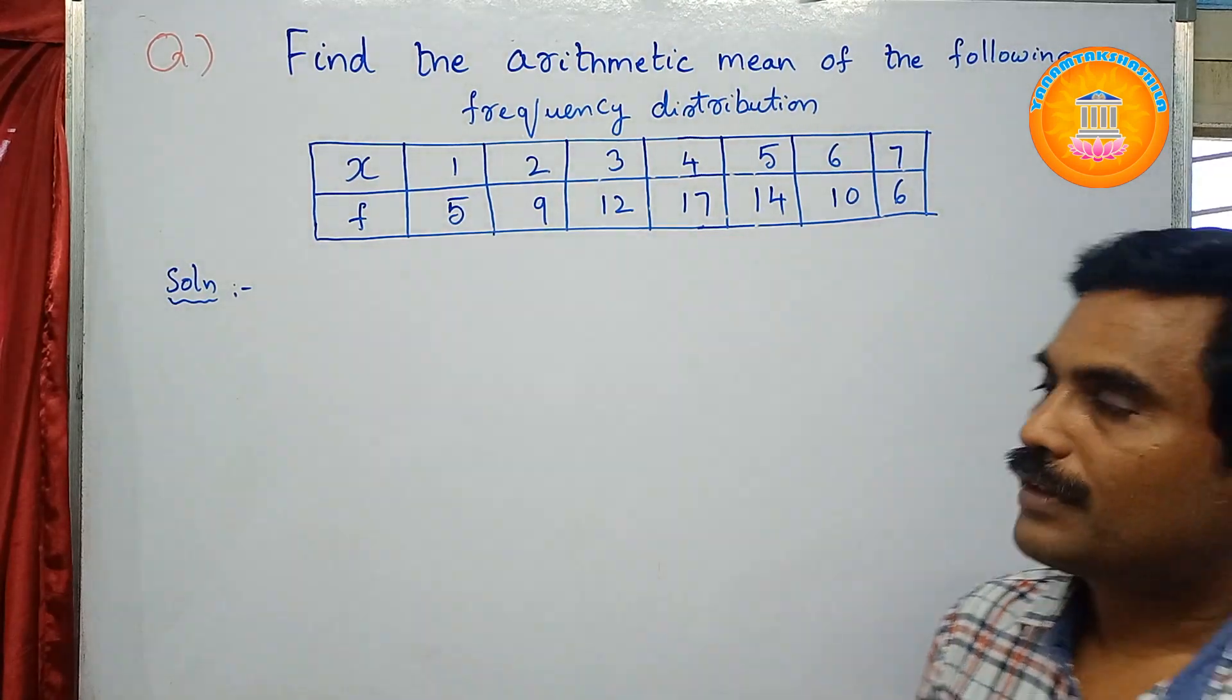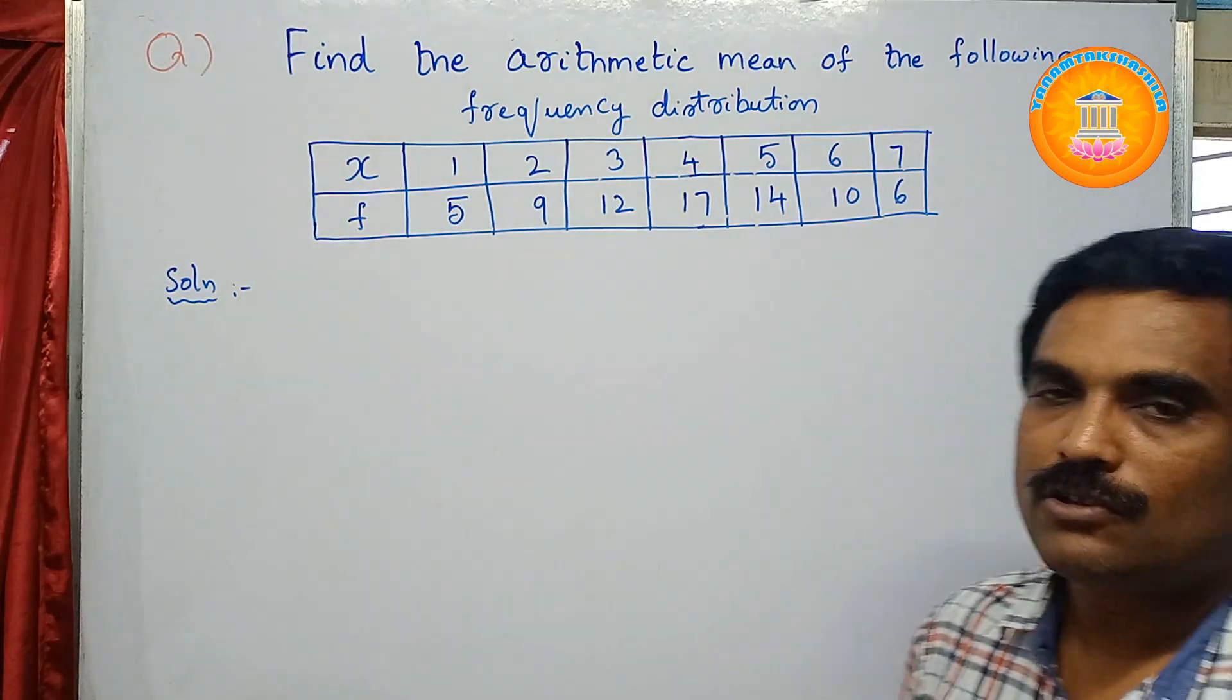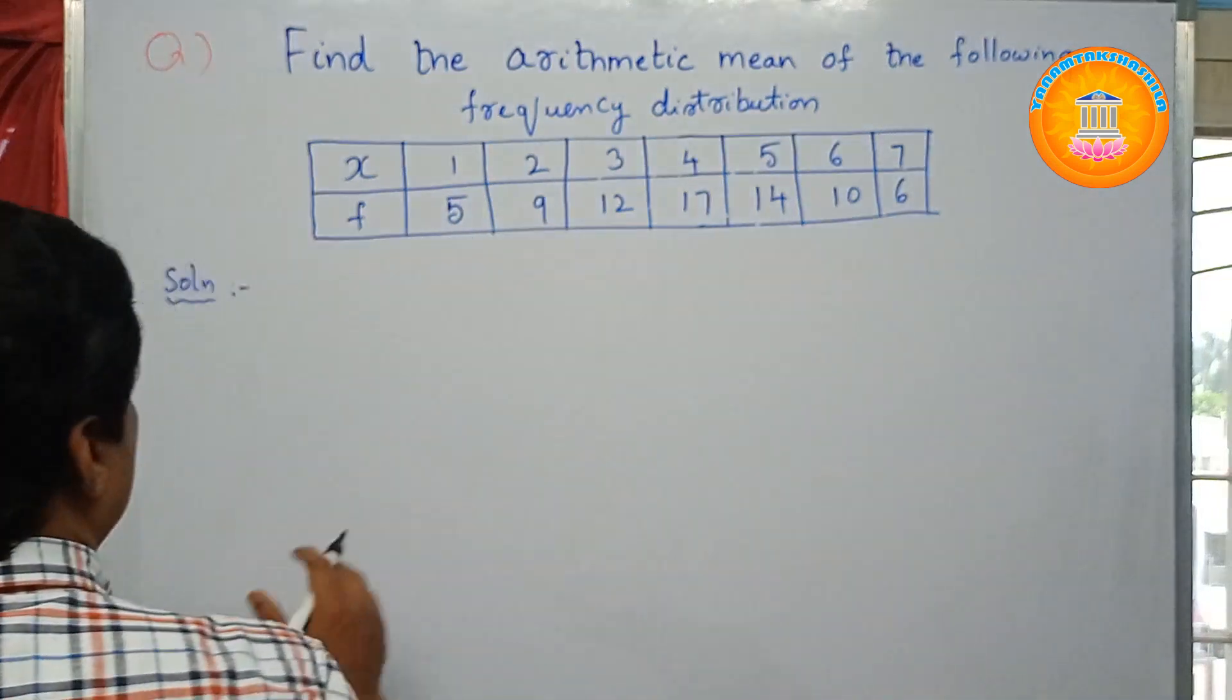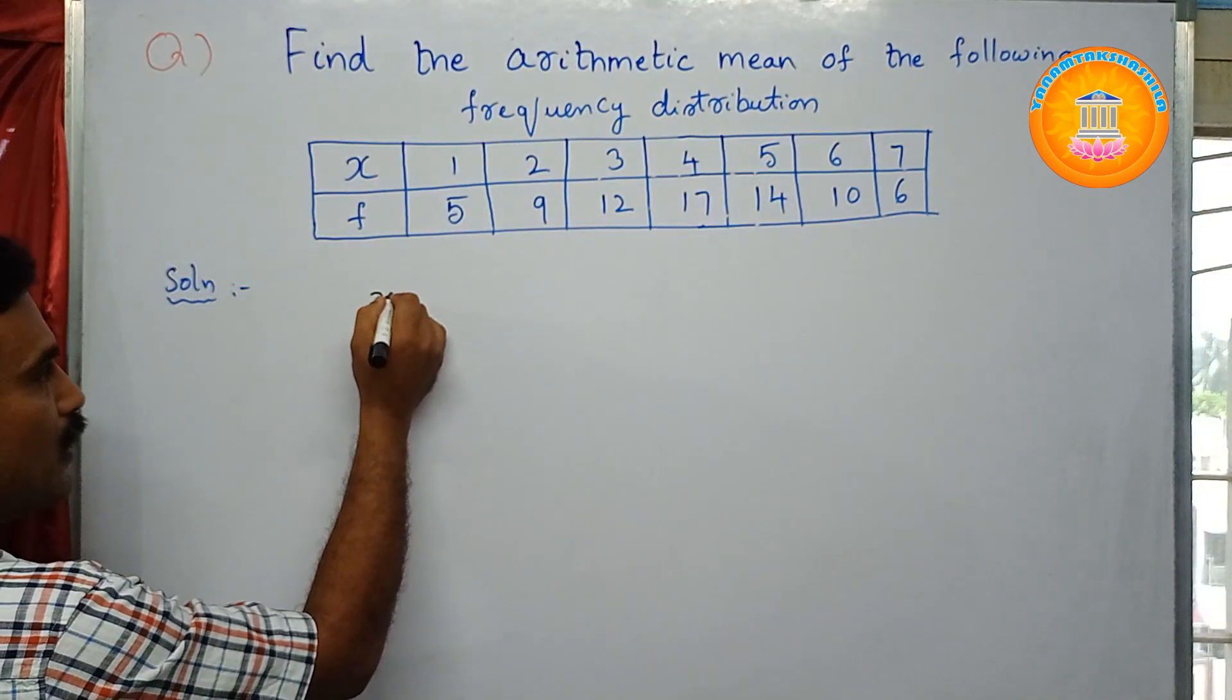From these values you need to find the arithmetic mean. For this we are going to use a formula. We know that arithmetic mean is denoted by symbol X bar.